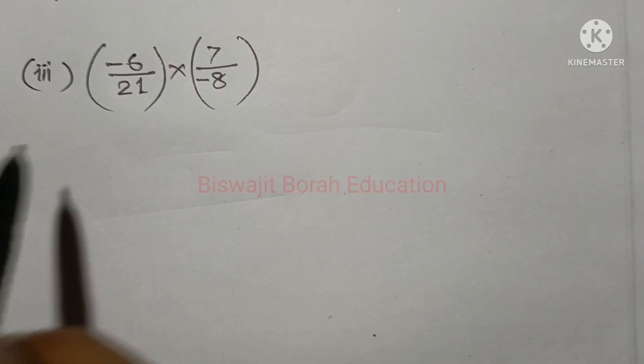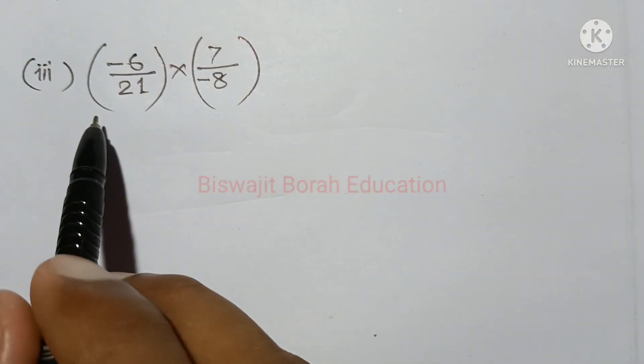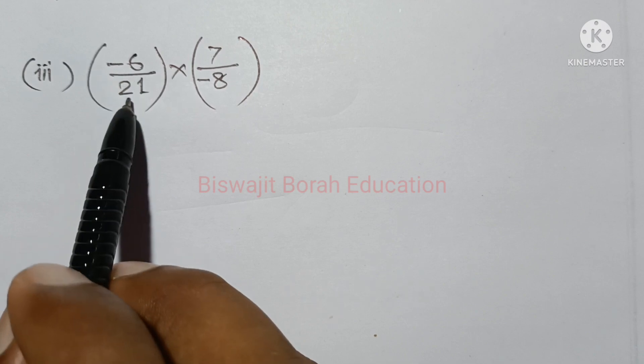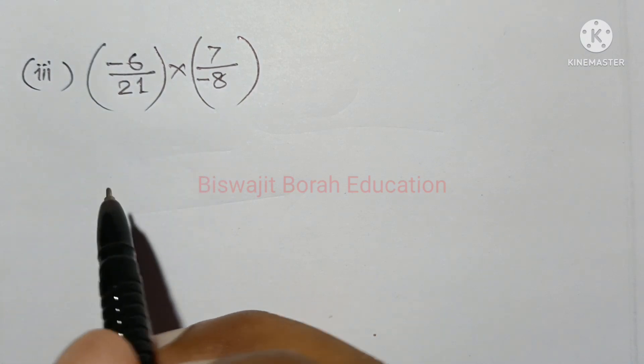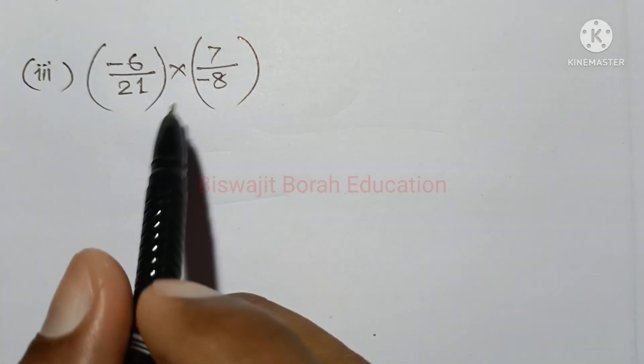Now for the 3rd number: the 3rd number multiplied is minus 6 by 21, into 7 by minus 8.